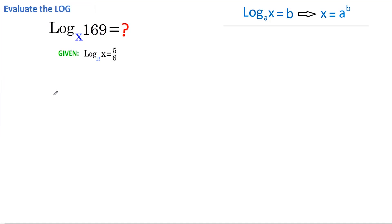Okay, let's begin. We're given that log base 13 of x equals 5 over 6. In accordance with this rule, I'm going to rewrite this as 13 to the power of 5 divided by 6 equals x.